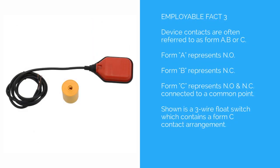Employable Fact 3: device contacts are often referred to as Form A, B, or C. Form A represents normally open. Form B represents normally closed. Form C represents normally open and normally closed connected to a common point. Shown is a 3-wire float switch which contains a Form C contact arrangement.